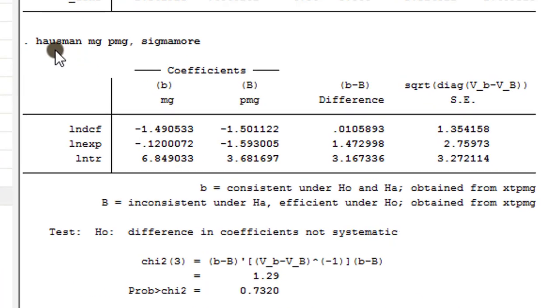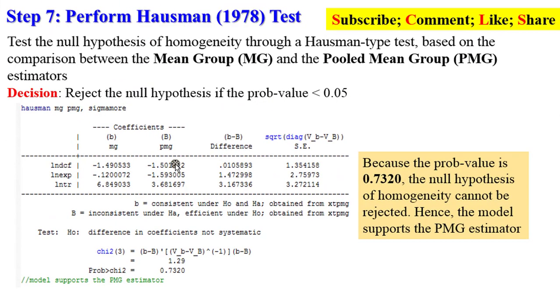Remember our decision criteria: if the probability value is greater than 0.05, you cannot reject the null hypothesis which shows that PMG is the most efficient estimator under the null. Given the p-value of 0.7320, we are going to use the PMG estimator to analyze our panel data. We cannot reject the null hypothesis that the pooled mean group is a more efficient estimator under the null, under the hypothesis of slope homogeneity. Therefore, I'm going to use the PMG estimator to analyze this model.